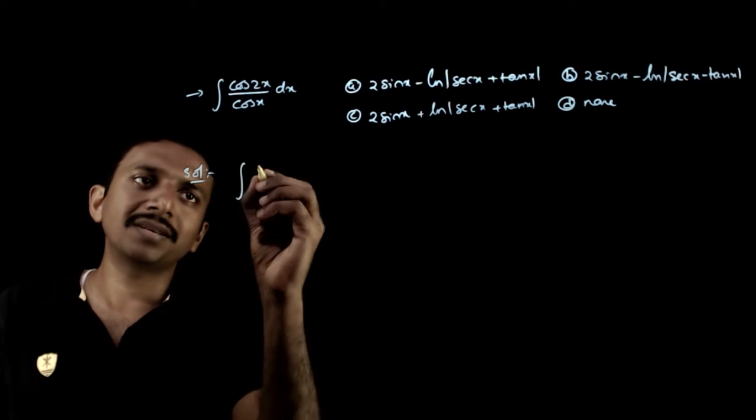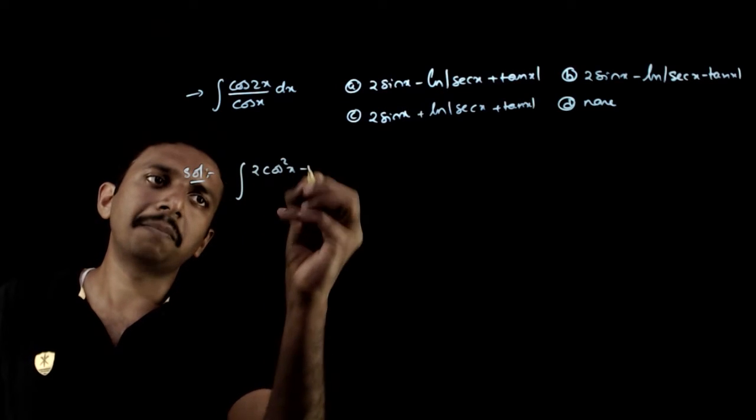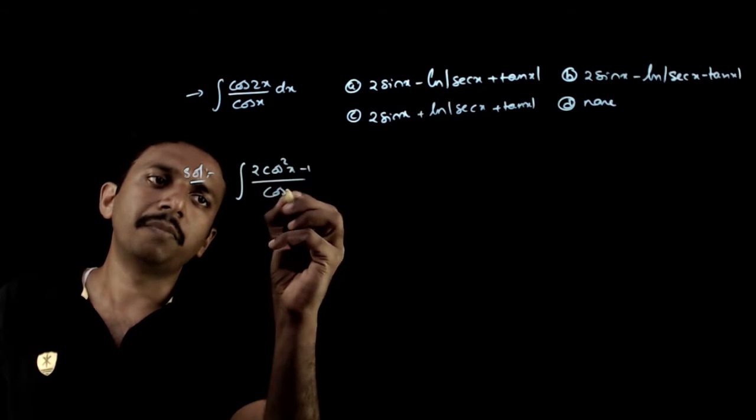So now, we can write cos 2x as 2cos²x minus 1, divided by cos x dx.